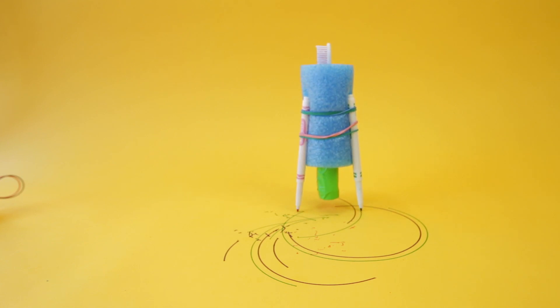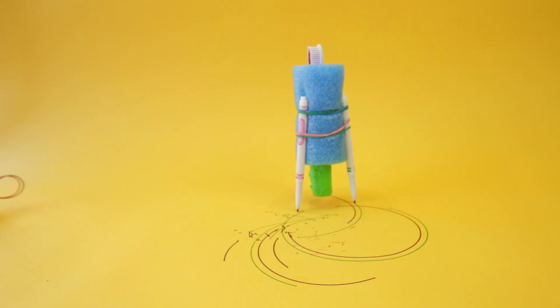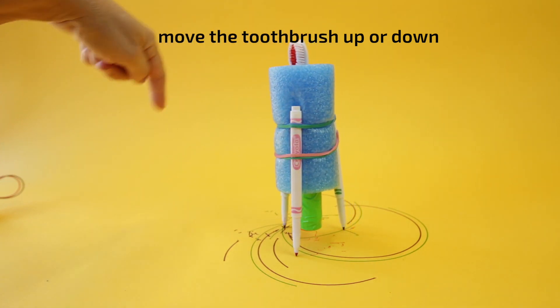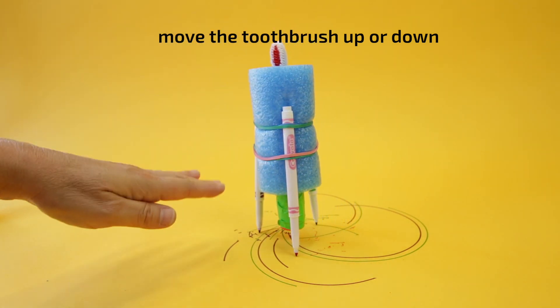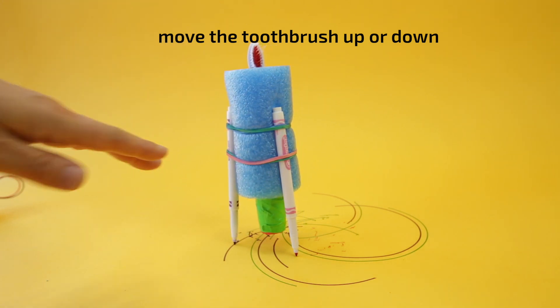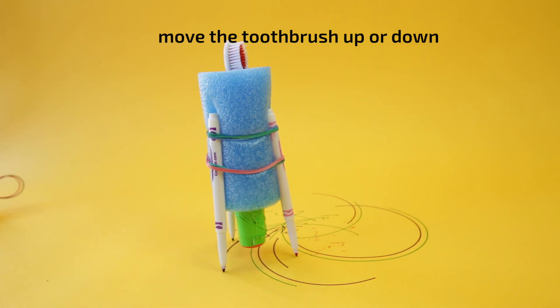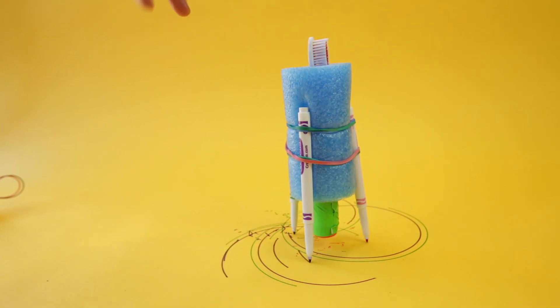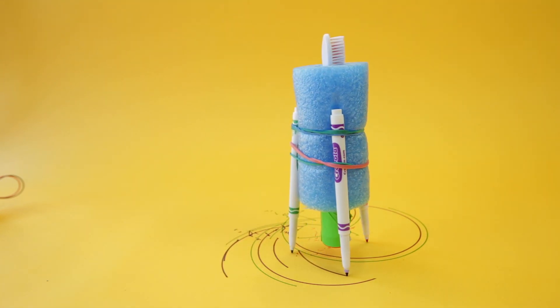Now one of the things I found with this bot that usually needs adjusting is the location of the electric toothbrush in the pool noodle. It usually has to go up or down and you're going to have to play with that to see where the best spot is for it to create the most vibrations in making this bot move.